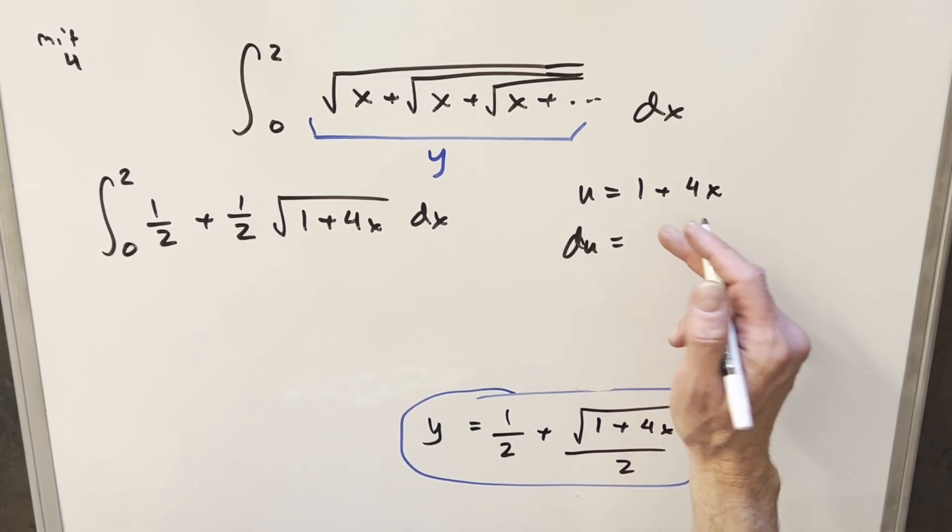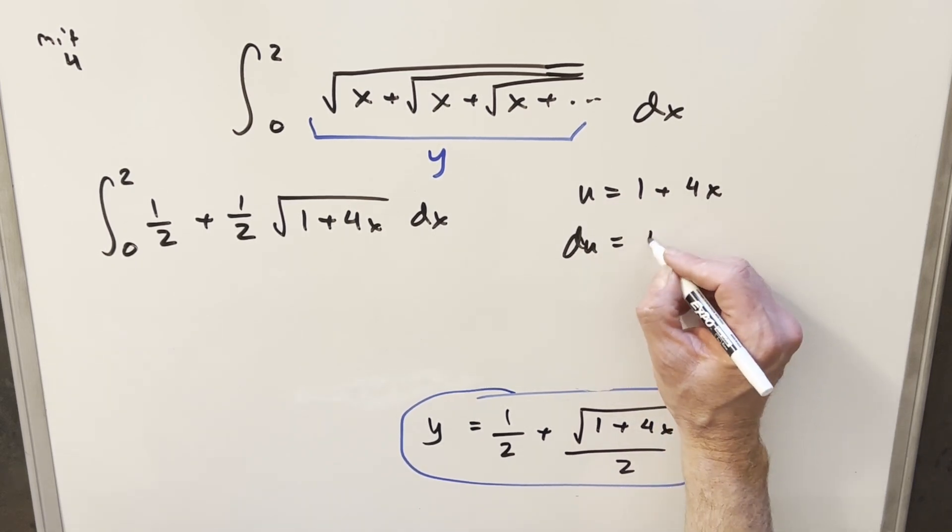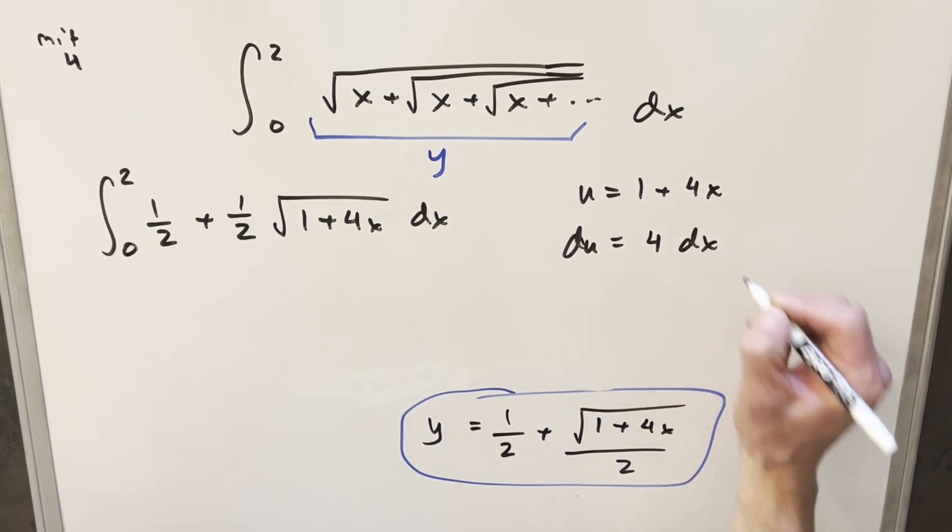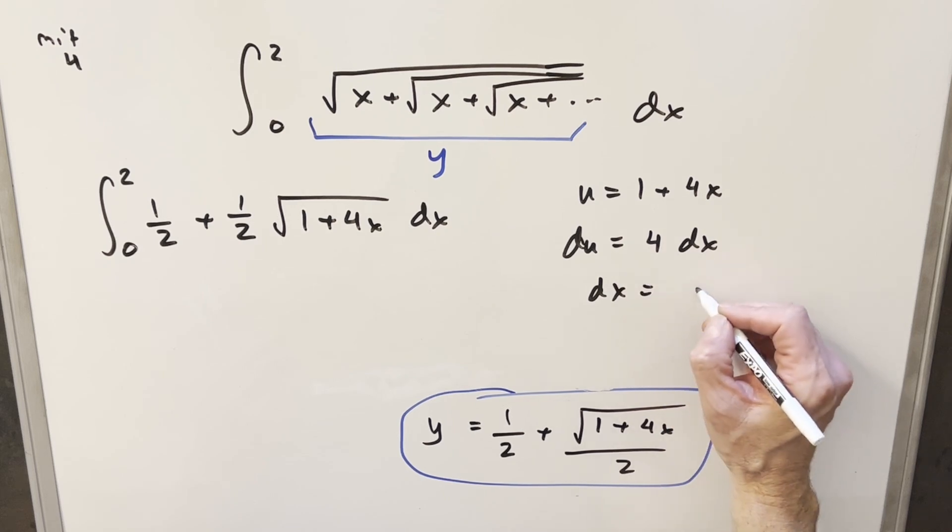For our du, the derivative of 1 is 0, and the derivative of 4x is 4 dx. I'll solve for dx, so dx equals du over 4.